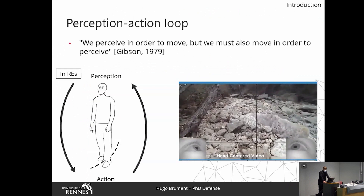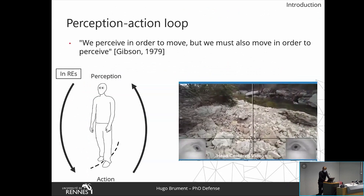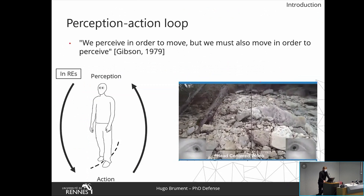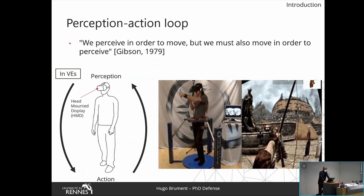Gibson, the founder of the ecological theory of visual perception, stated that there is a strong coupling between humans and their environment. In particular, he mentioned that we perceive in order to move, but we also move in order to perceive. As you can see on the video, this loop enables the perception of sensory information, like the optical flow or the surrounding elements of the environment such as the rocks, in order to make actions — here, working safely — based on what is perceived. This is how humans achieve exploration in real environments.